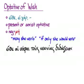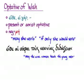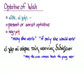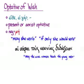Here's an example in Greek. We have the introductory word eithe and an aorist third-person plural optative from didaskō, so our translation is 'may the wise women teach the young men.' That would be the same without an introductory word or with ei gar. Ei gar hai sophai tous neanias didaxeian also means 'may the wise women teach the young men,' as does simply hai sophai tous neanias didaxeian.